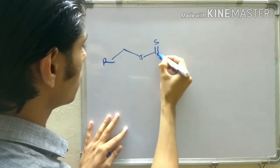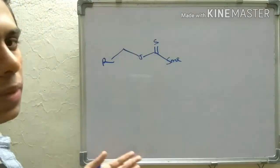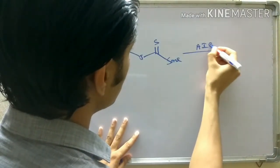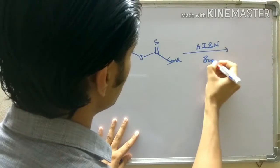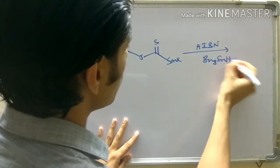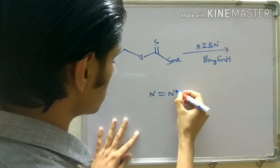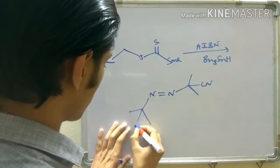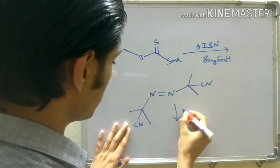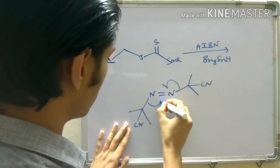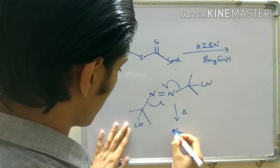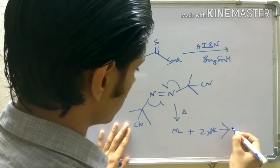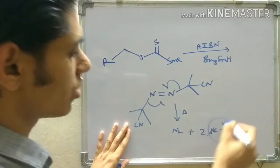After that you obtain the xanthate ester, which is a stable molecule — in our case it was stable enough to be characterized by NMR and mass spectroscopy. In the second step, AIBN (azobisisobutyronitrile) and Bu₃SnH are used. When you heat AIBN it generates nitrogen gas and two cyanomethyl radicals, which initiates the radical chain reaction.